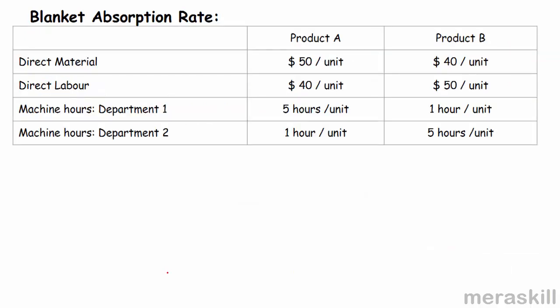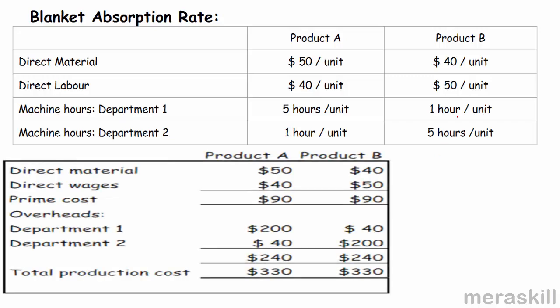Now let's compute the total cost. For product A: direct material 50 plus direct labor 40 gives prime cost of 90. Overheads: 5 hours into $40 plus 1 hour into $40 equals 240, giving a total of 6 hours at $40. For product B: direct material 40 plus direct labor 50 also gives prime cost of 90. Overheads are again 1 hour into 40 plus 5 hours into 40 — also 240. Since it's a single rate, I could simply write 6 into 40 equals 240 for both.